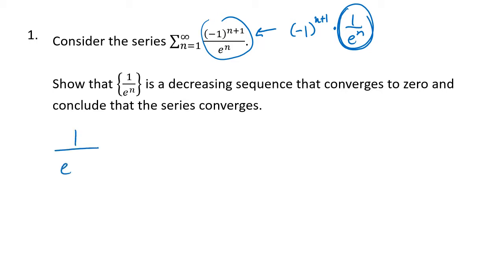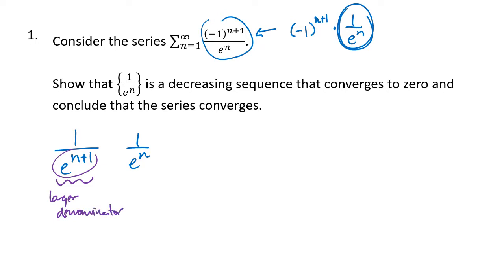There's not really a lot to do here. To show that the sequence is decreasing, we compare 1 over e to the n plus 1 to 1 over e to the n. Since e to the n plus 1 is a larger number, the fraction on the left has a larger denominator, which means it's a smaller fraction. That shows it's decreasing.